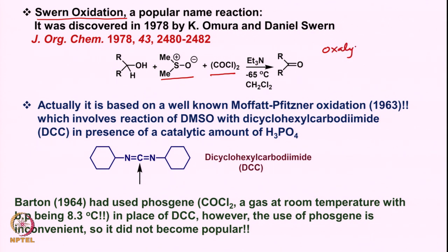Oxalyl chloride reacts with DMSO at low temperature to form a certain intermediate, which then reacts with the alcohol in the presence of triethylamine at minus 65 degrees in dichloromethane as solvent, eventually leading to the formation of the ketone. This was reported in 1978 by Swern and his collaborator Kumura, and is popularly known as Swern oxidation.